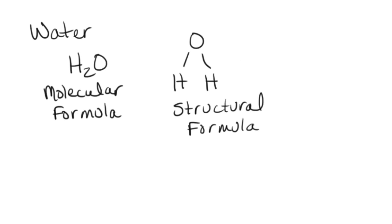With the water molecule in structural form, we have two single covalent bonds, but these also happen to be polar covalent bonds because those electrons are going to be held much closer to the oxygen atom. That has to do with the fact that oxygen is more electronegative than hydrogen. The end result is that the oxygen end of the water molecule is always a little bit negative, and the hydrogen ends are always a little bit positive.